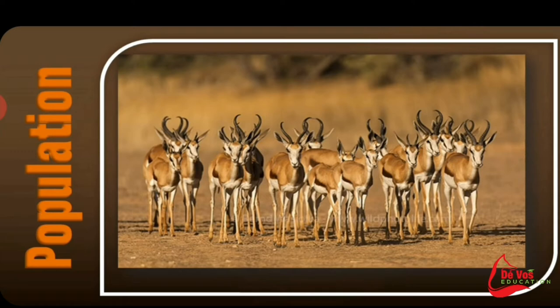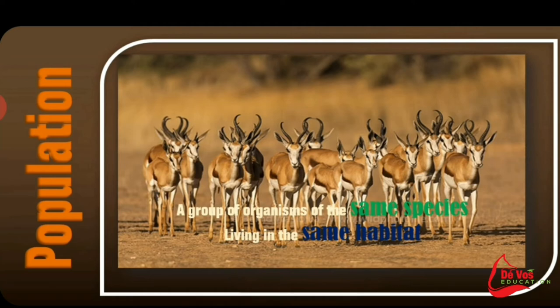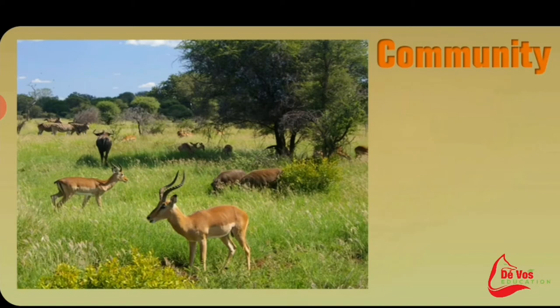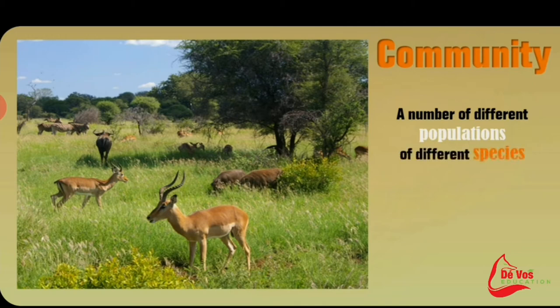A population is a group of a single species living together in the same area, capable of interbreeding with one another freely. A community is more complex — a community represents a number of different populations of different species living in a specific area.